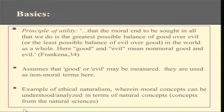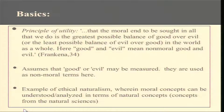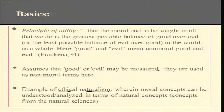Utilitarianism is basically based on the principle of utility. The principle of utility says that the moral end to be sought in all that we do is the greatest possible balance of good over evil, or the least possible balance of evil over good, in the world as a whole. Here, good and evil mean non-moral good and evil. It makes a few assumptions — it assumes that good or evil may be measured, and they are used as non-moral terms here. This goes on to subscribe to something called Ethical Naturalism, which we will talk about shortly.